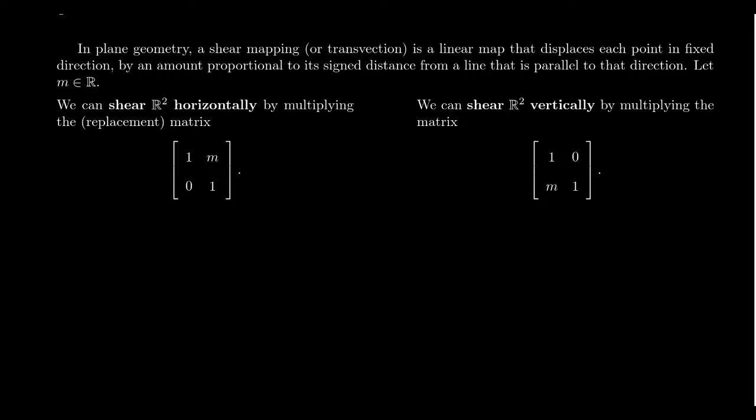So what does one mean by a shearing map or by a transvection? The formal definition is that this is going to be a linear map that displaces each point in a fixed direction by an amount proportional to its signed distance from a line that is parallel to that direction.